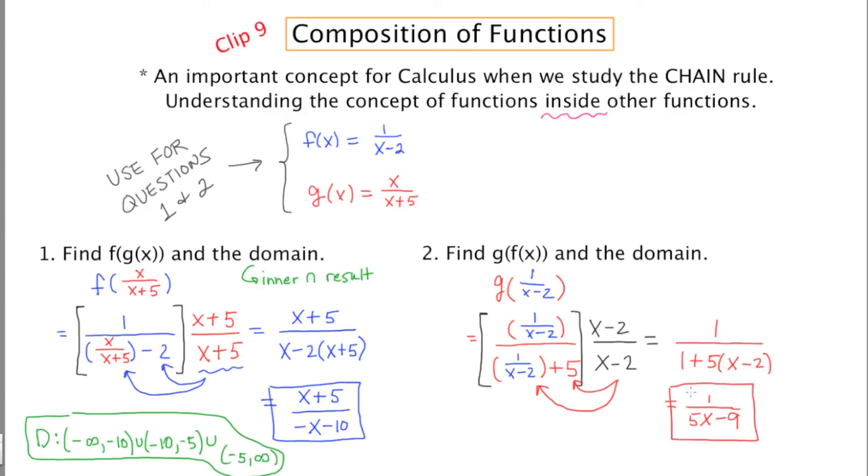So this is the composition of functions for g of f of x, but now we've got to find the domain again, and the domain is the inner function intersected with the result. And here, x cannot equal 2, and then over here, x cannot equal 9 fifths. So those are the two things that x cannot be, and if they can't be those two things, they can be anything else.